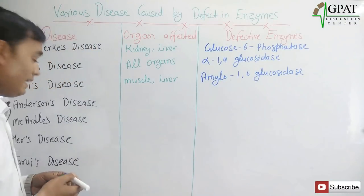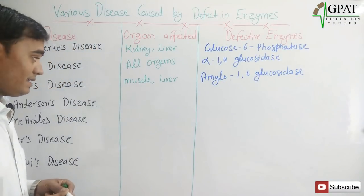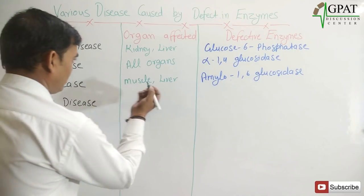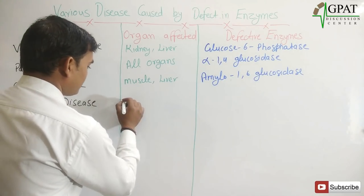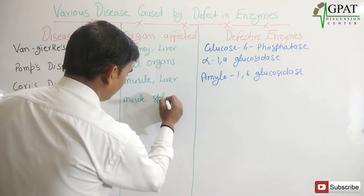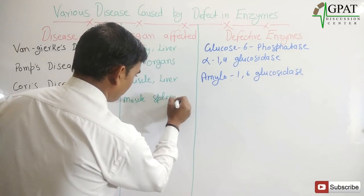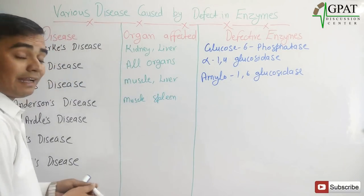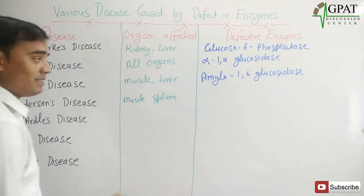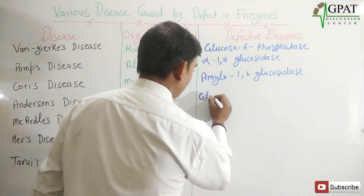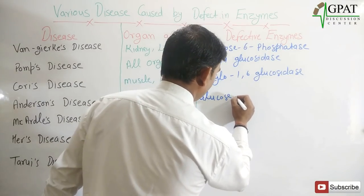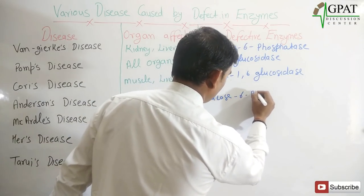Next, Anderson disease. Anderson disease mainly affects muscles and spleen. The enzyme responsible for Anderson disease is glucose-6-phosphatase.